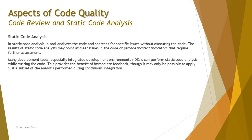For static code analysis, a tool analyzes the code and searches for specific issues without executing the code. The results may point to clear issues or provide indirect indicators that require further assessment. These tools analyze things like unreachable code, dead code, or variables that are declared but never used — issues that would be complicated to find manually when you have 400 to 500 lines of code. Static analysis tools minimize effort while being more effective at finding issues that are difficult to find manually.